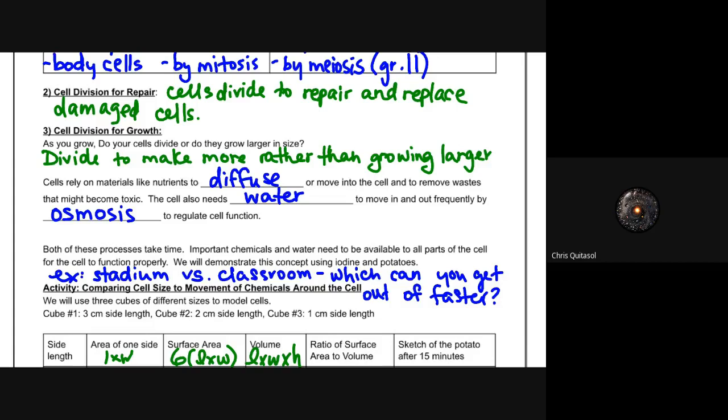The best way to do that is to have many, many, many smaller cells instead of a few large cells. When you think about the analogy that can help you understand this, people in a stadium versus people in a classroom, which one will get out faster? The smaller classroom because it is smaller, so you want to have many smaller cells instead of just a few large cells.